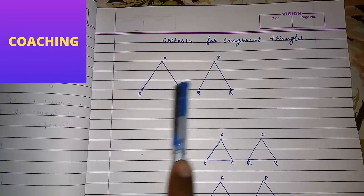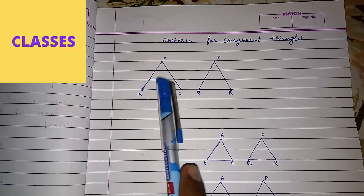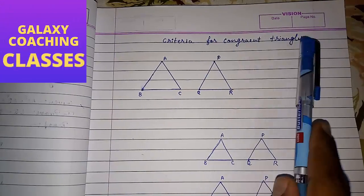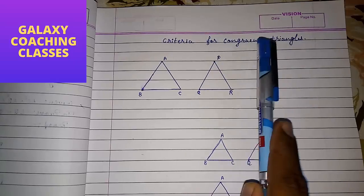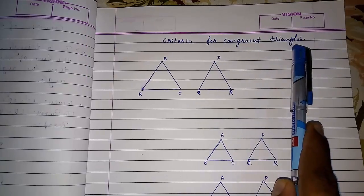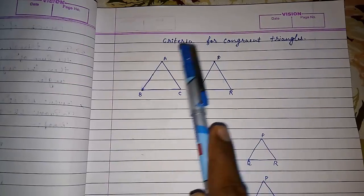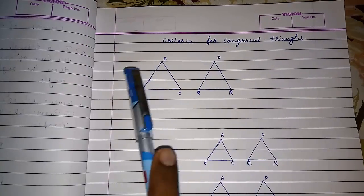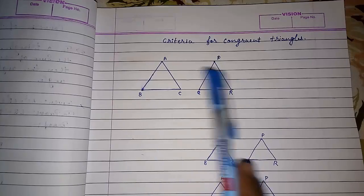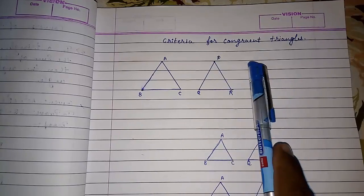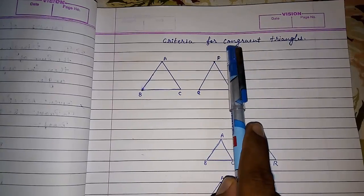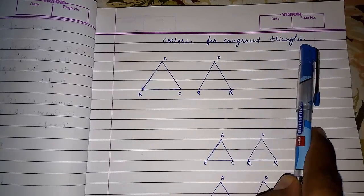Hello friends. Today we are going to study about congruence of triangles and the different rules by which we can make two triangles congruent. But before that, first we should know what congruent triangles are.